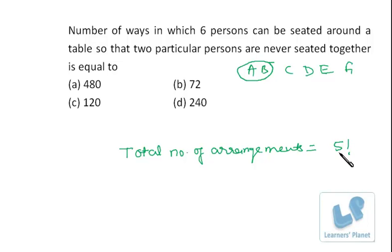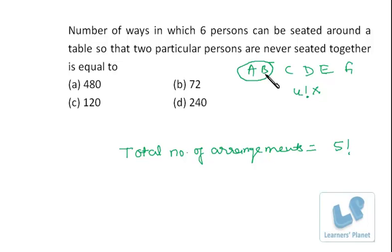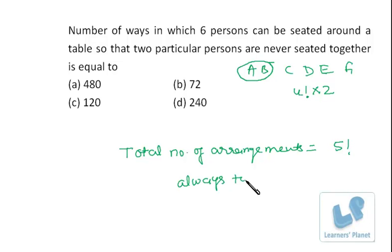Now I take these two people together, so I have five persons sitting at five places around a circle. The total number of arrangements will be 4! and since the two persons A and B can also be interchanged, I multiply by 2. So 4! × 2 gives the number of ways when both of them are always together, which is 48.